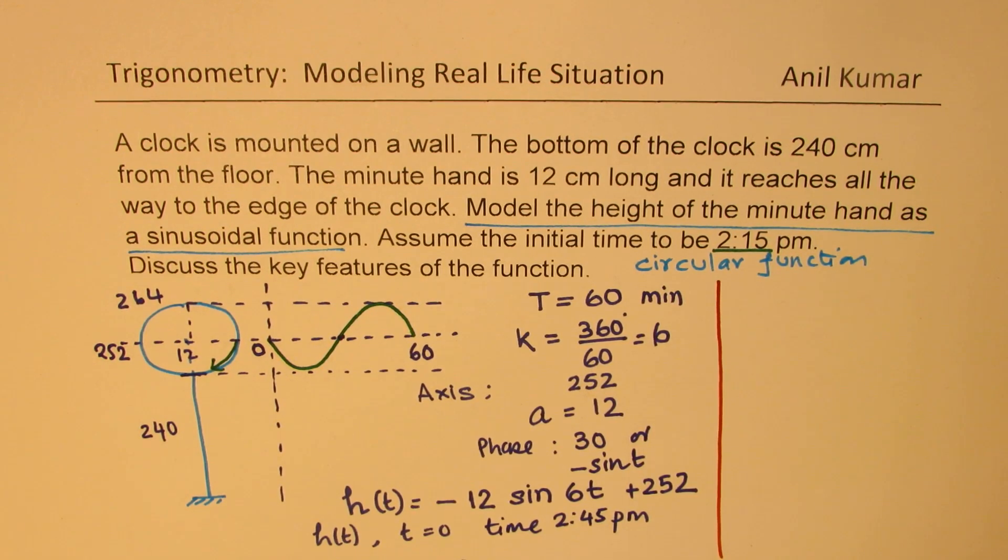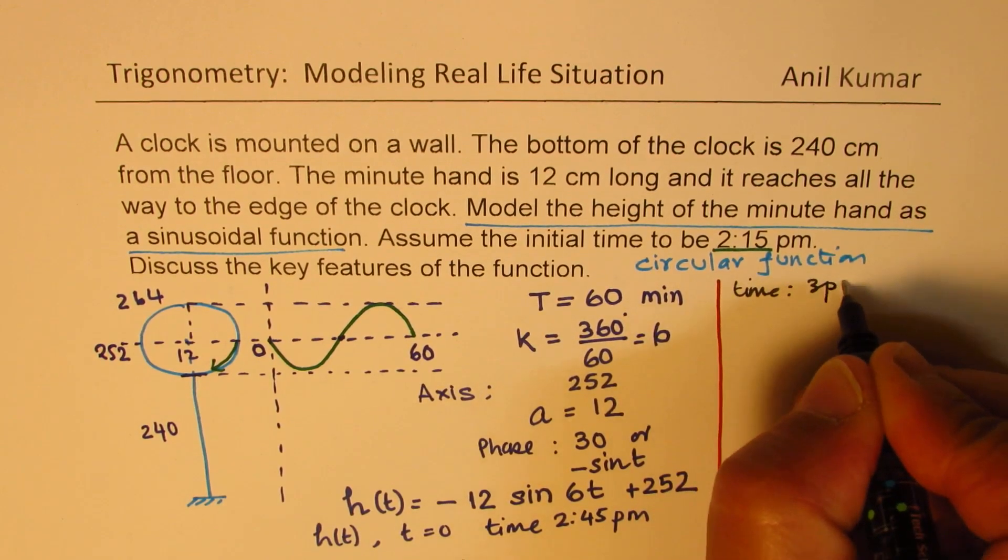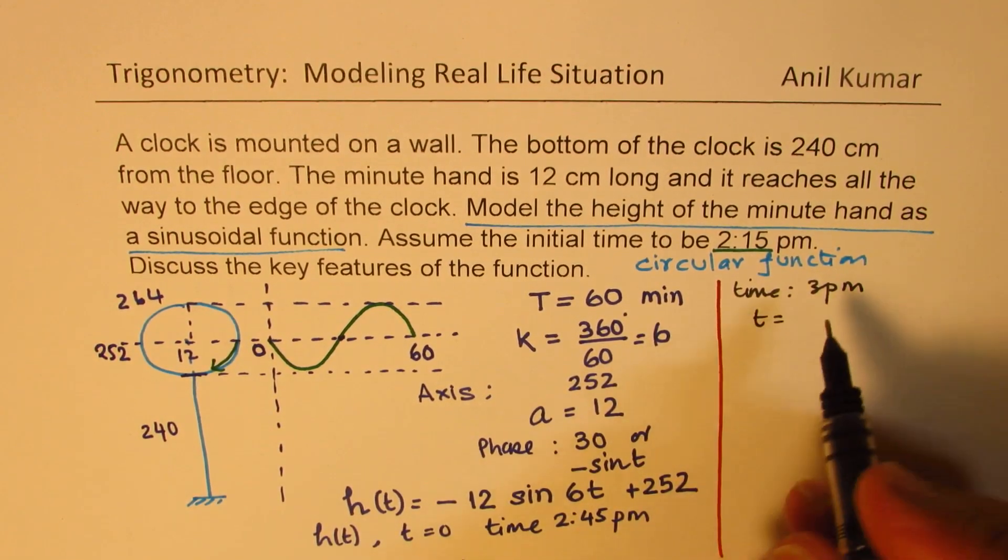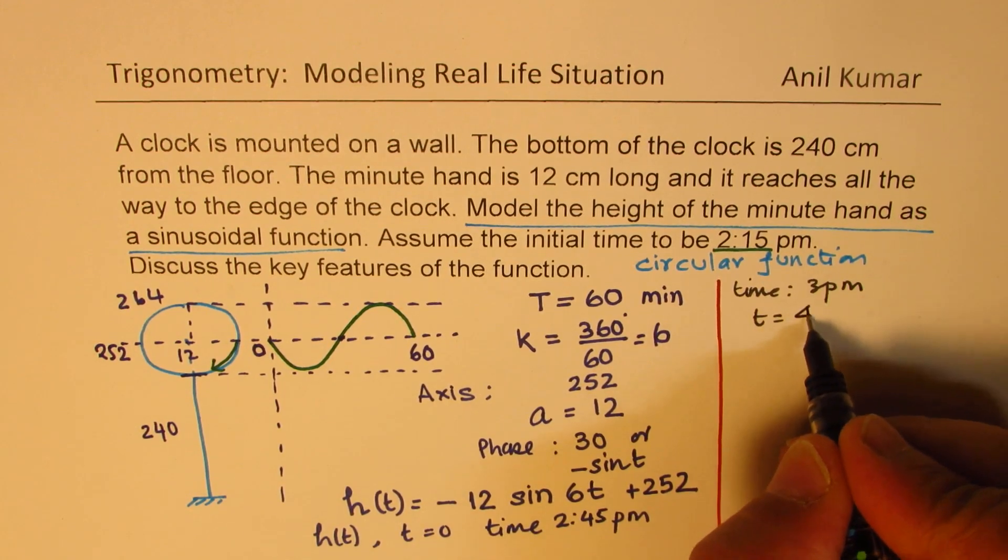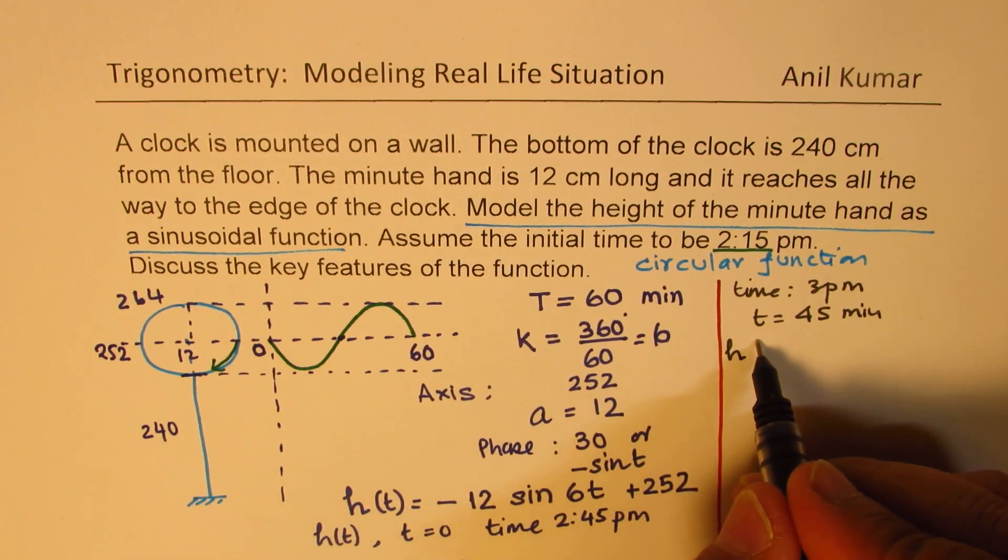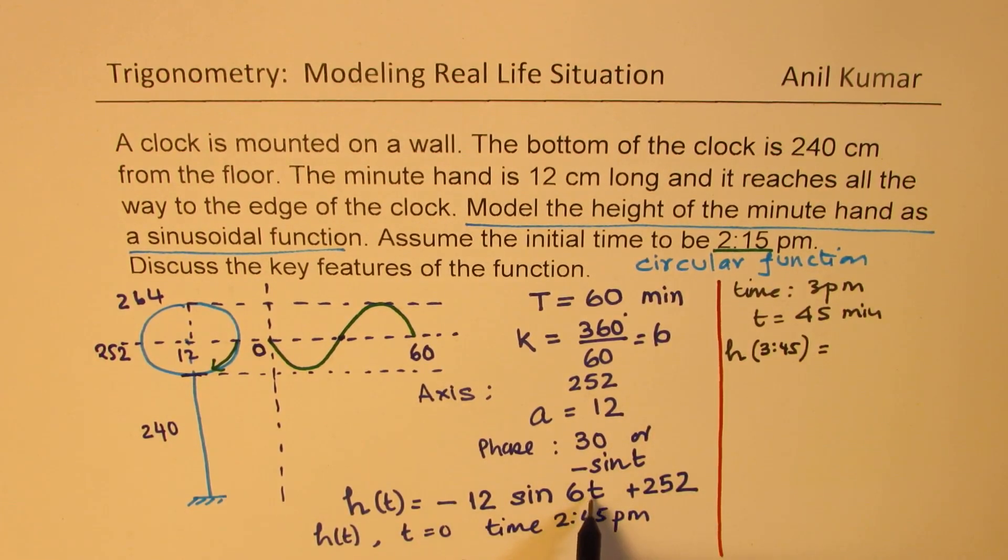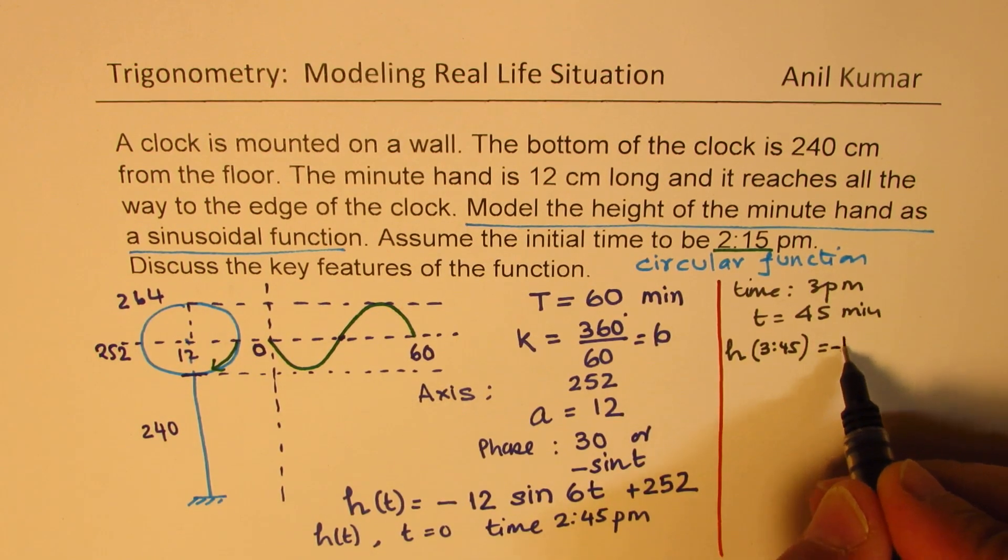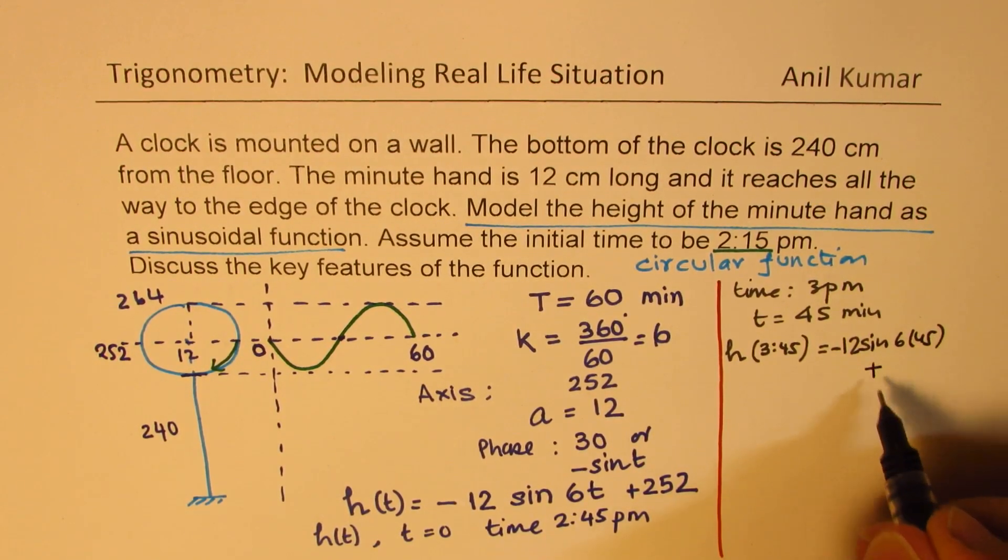Now, let's see how to work out some calculations based on the information given to us. If the time is 3 p.m., the value of t will be the difference between 3 p.m. and 2:15, which is 45 minutes. If I substitute this, then the height of the minutes arm at 3 p.m. will be equal to minus 12 sine of 6 times 45 plus 252.